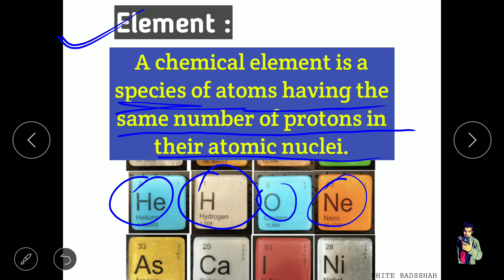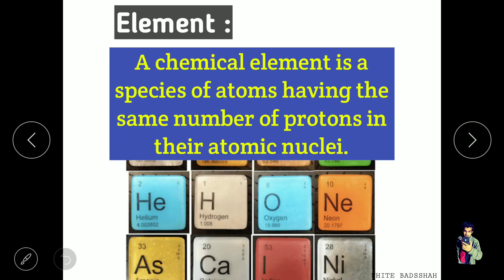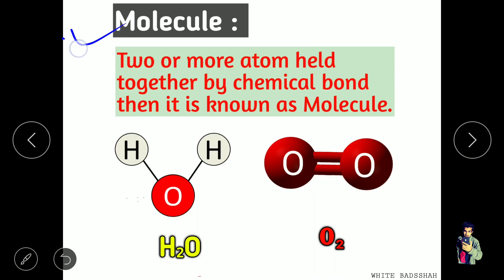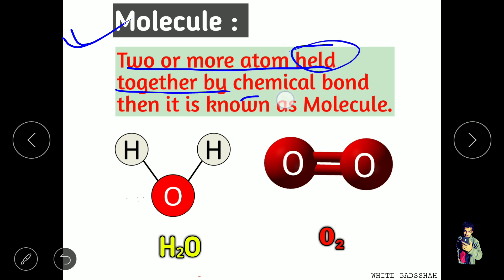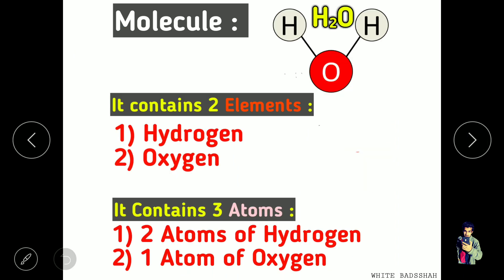The atomic number is just a numerical value for that particular element. Now let's see what a molecule is. If two or more atoms are held together or joined together by a chemical bond, then it is known as a molecule. Examples include H2O and O2.